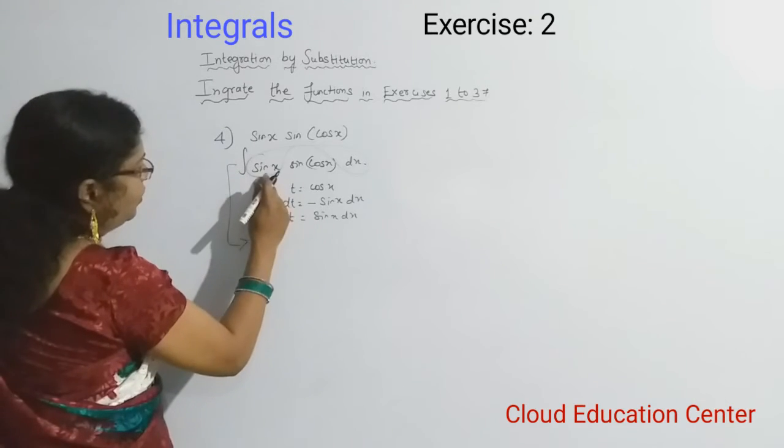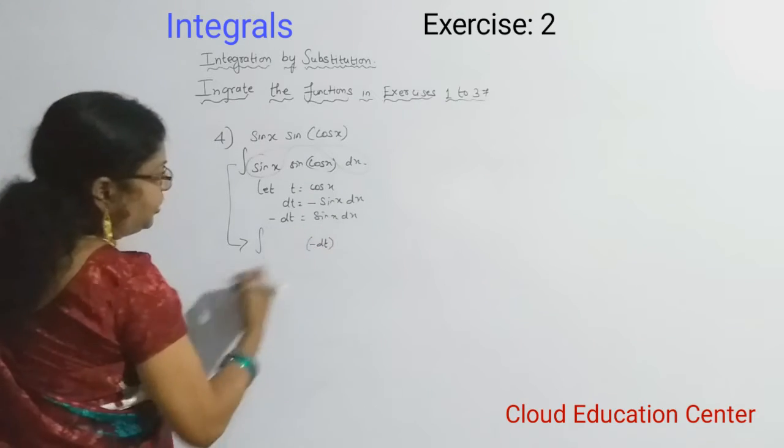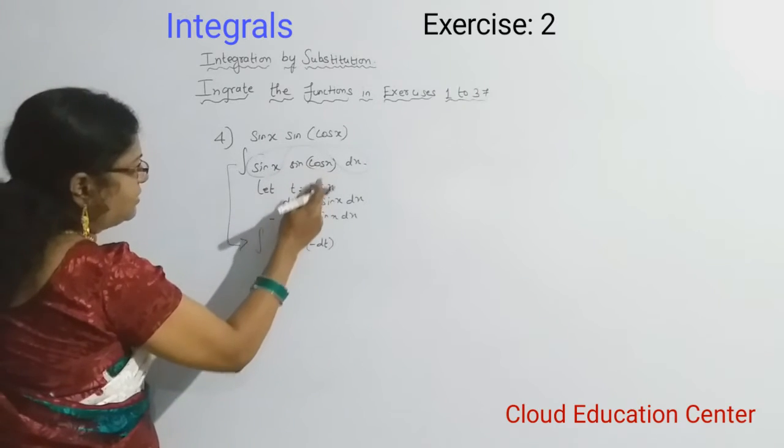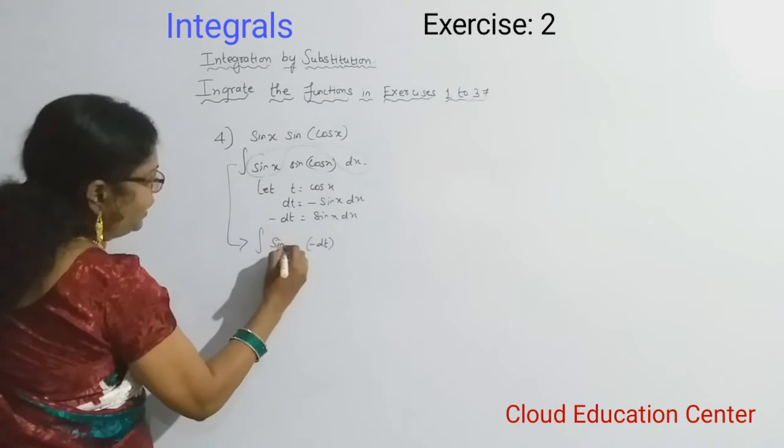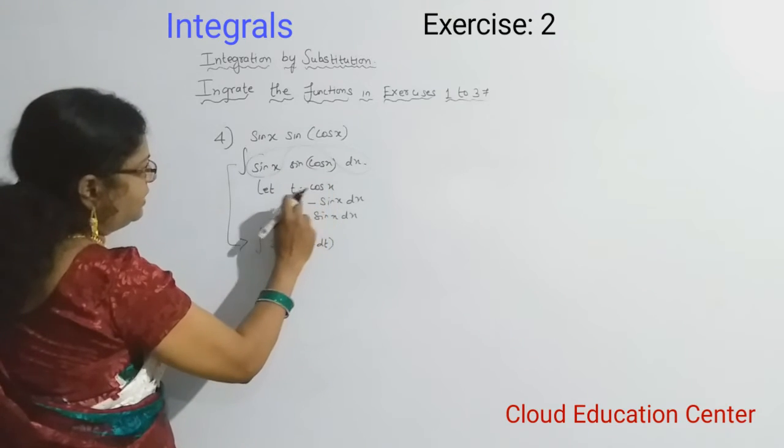Integration of sin x dx together is minus dt. We will put it inside the bracket. And then what is cos x? Cos x is nothing but t. So we will get sin of t. So sin we will write as it is. Cos x is nothing but t.